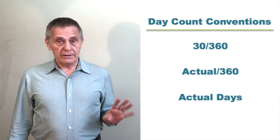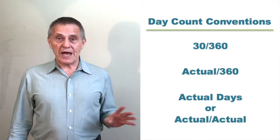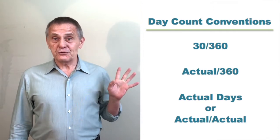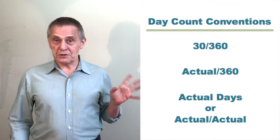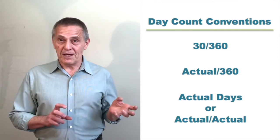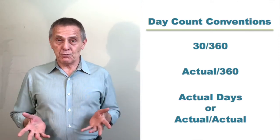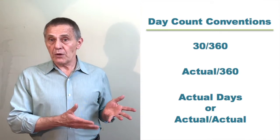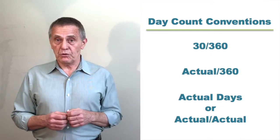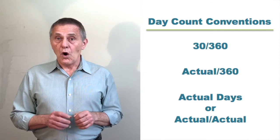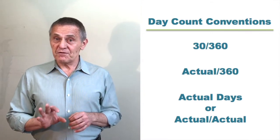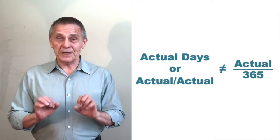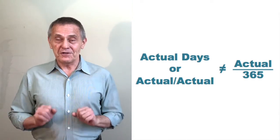That last one is sometimes referred to as actual over actual because you'll note that the first two day count conventions I introduced are expressed as something over something, and the human eye tends to recognize patterns more readily. So actual days is sometimes expressed as actual over actual, although that is sometimes confused with actual over 365, which is something different, but we'll get into those issues as part of this video.